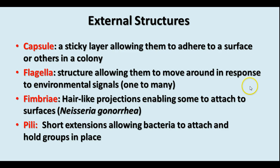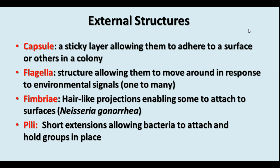Looking at external structures: we have a capsule, which is a sticky layer that allows bacteria to adhere to a surface or others in a colony — not all bacteria have capsules, some do and some do not. We also have flagella, which are structures that allow bacteria to move around. They can have one flagellum, many flagella, or no flagella at all.